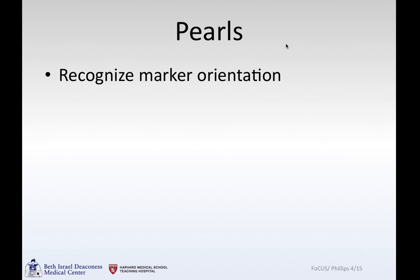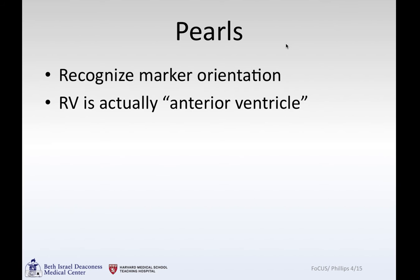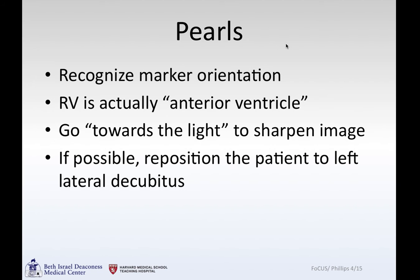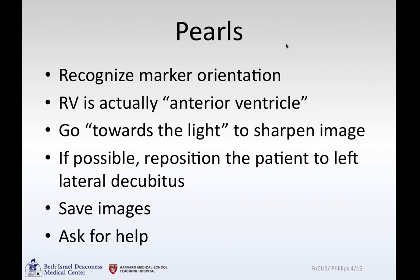As you go through your own scanning, it's important to remember which way the marker is facing, as this determines how the image is represented on screen. The right ventricle is actually the anterior ventricle — the thing you see closest to the chest wall in the parasternal long axis. To sharpen your image, make small adjustments with your hand to make the image brighter — one way to remember is to go towards the light. If possible, reposition the patient, for example into left lateral decubitus to get the apical views. Save your images and always ask for help.